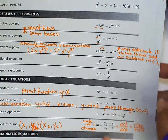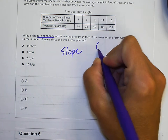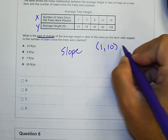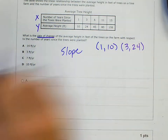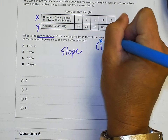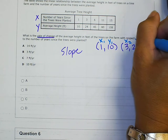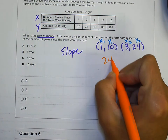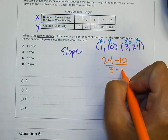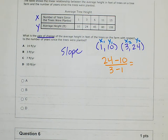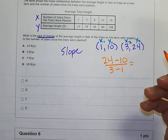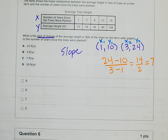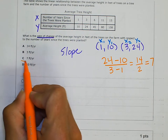Using the slope formula y₂ − y₁ over x₂ − x₁ with points (1, 10) and (3, 24): I get (24 − 10) over (3 − 1), which is 14 over 2, which is 7. So the slope of the line is 7 feet per year.